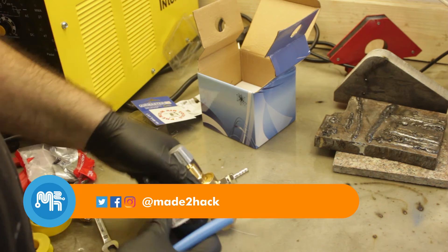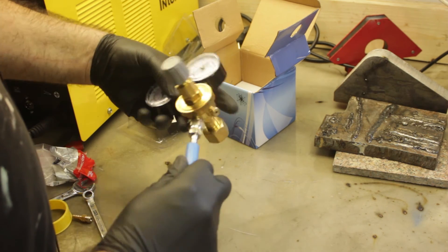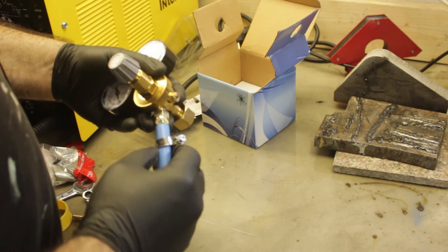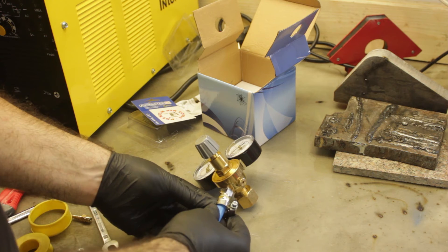With the 8 millimeter hose barb, I can throw in a hose clamp and just insert the 8 millimeter hose and clamp it down.